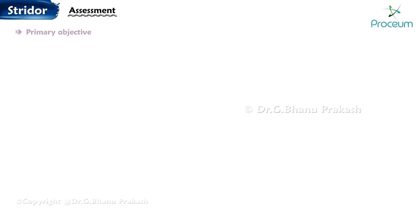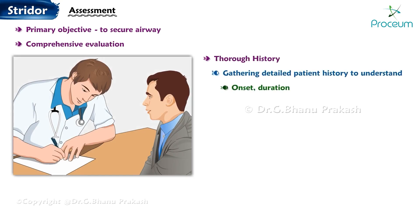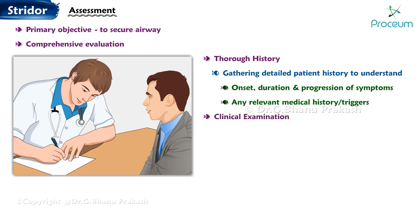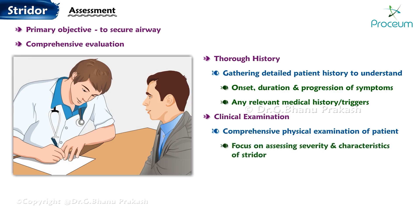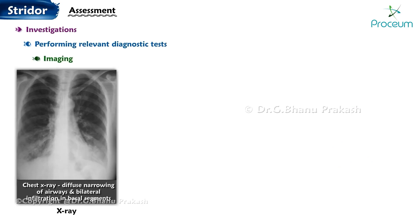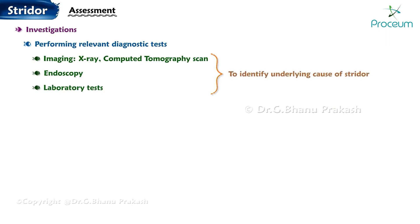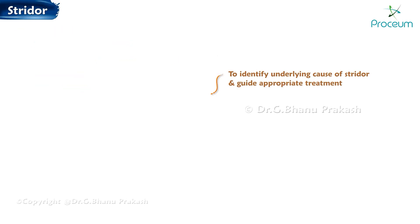Assessment. The primary objective is to secure the airway in case of an emergency. A comprehensive evaluation involves thorough history — gathering a detailed patient history to understand the onset, duration, and progression of symptoms, as well as any relevant medical history or triggers. Clinical examination: a comprehensive physical examination with a focus on assessing the severity and characteristics of Strider, including its type — inspiratory, expiratory, or biphasic — pitch, and associated symptoms. Investigations: performing relevant diagnostic tests such as imaging, X-ray, computed tomography scan, endoscopy, or laboratory tests to identify the underlying cause of Strider and guide appropriate treatment.